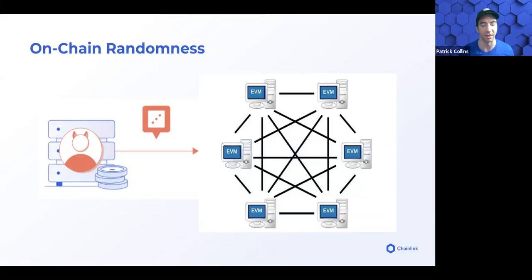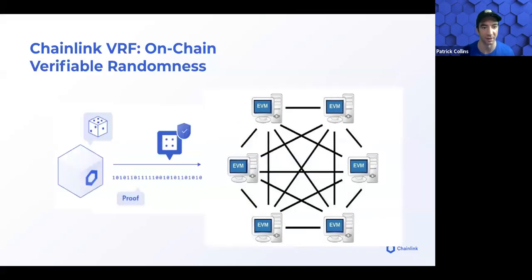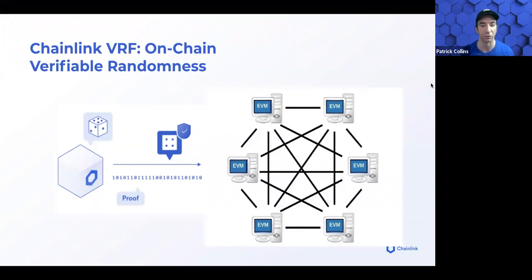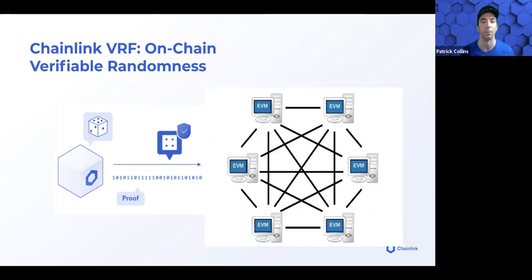Chainlink VRF can actually provably say 'here is why this number is random,' which is a massive milestone. Not only are you getting an actually random number from off chain that nobody can interact with or tamper with — they're also proving it and saying 'here's why it's random.' There's some cryptographic magic that goes on behind the scenes. They're saying not only is this number coming from an actual random source, but here's the cryptographic proof as to why it's random. This is a massive, monumental achievement.